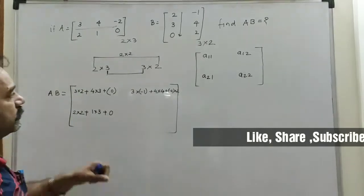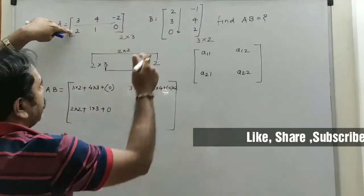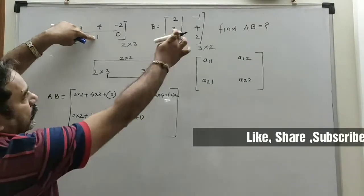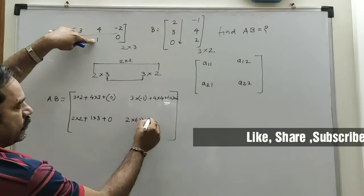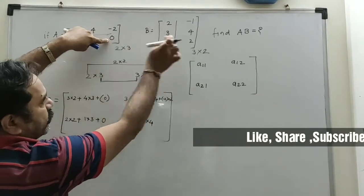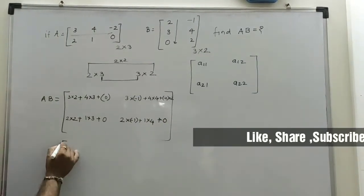Now A21. That means second row and first column. So 2 into 2 plus 1 into 3 plus 0 into 0 means 0. Now A22, second row and second element: 2 into minus 1 plus 1 into 4 plus 0 into 2 means 0.